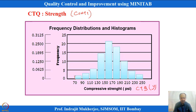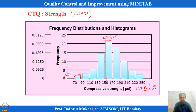Looking at the histogram: 70 to 90 has around 3 observations, 90 to 110 has about 4 observations. The highest frequency is in the 150 to 170 range with 22 observations — most observations cluster around 150 to 170. Plotting CTQ data coming out of the process using a histogram is the approach for continuous data types.